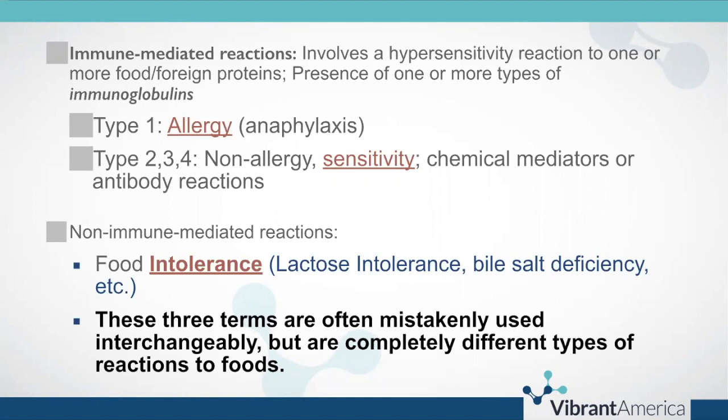Types 2, 3, and 4 are non-allergy hypersensitivities. They involve either antibodies or chemical mediators. And then we have non-immune mediated reactions like food intolerances. Lactose intolerance is a good example, or a bile salt deficiency in which somebody cannot adequately digest fats. The three terms — allergies, sensitivities, and intolerances — are often mistakenly used interchangeably, but they each mean something completely different clinically.